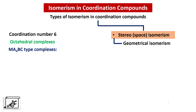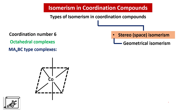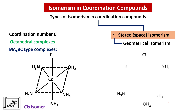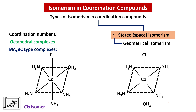Let us move to MA4BC type of complexes, where four ligands are the same and the fifth and sixth ligands are different. In such cases we look at the position of B and C atoms in the octahedral complex. For example, looking at the position of chlorine and water molecule: when these two are on the same side, this is a cis isomer. In the trans isomer, the chlorine and water molecule are on the opposite side.